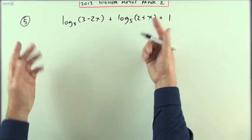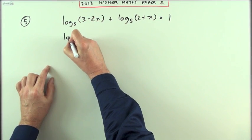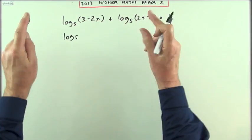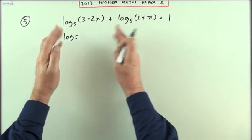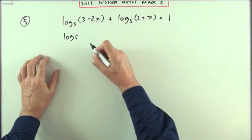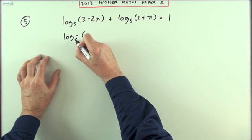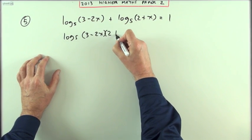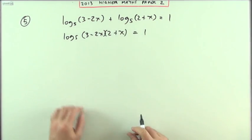Use your laws of logarithms to add these into a single log. So I'm going to have log base 5. If you're adding logs, it'll be the single log of the product of these arguments here. So it'll be log base 5 of 3 minus 2x times 2 plus x and that would equal 1.